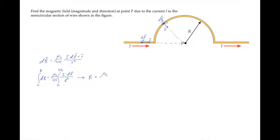We can simplify the integral by removing the constants and integrate dl halfway around a circle to find that the magnetic field simplifies to mu-not i over 4r.